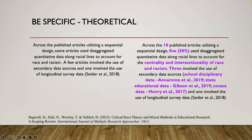Three articles involved secondary data sources — school disciplinary data, which is a huge dataset of everyone who has had any form of disciplinary action; state educational data like public school records; and census data, which happens every 10 years and provides demographics and cost of living in large datasets. One article involved longitudinal survey data. In the improved example, highlighted in purple, you can see where we go in and give those really specific details.